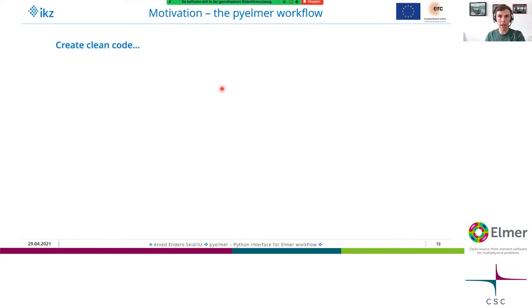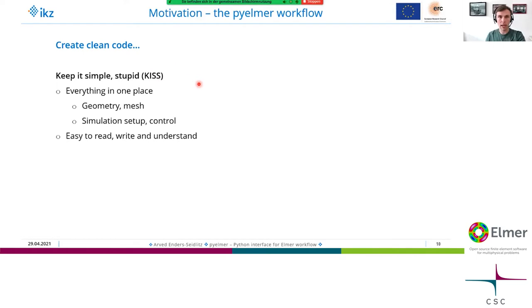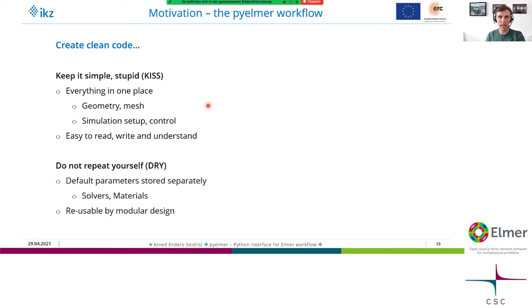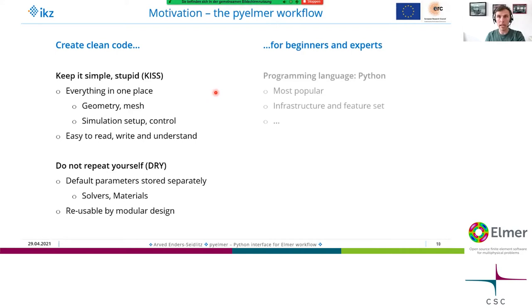For PyElmer, I wanted to improve the workflow by following two coding guidelines. One is 'keep it simple and stupid': everything should be in one place — the geometry setup, simulation control, and setup — easy to write and understand. Furthermore, I don't like copy-and-paste programming, so I have default parameters stored separately for solvers and materials, and everything should be as reusable as possible. Python is the best language for this — most popular, with a huge infrastructure and feature set.